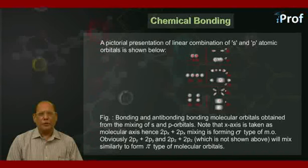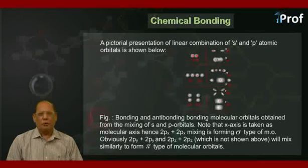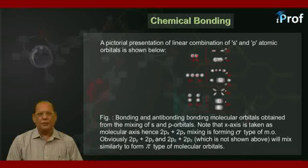Similarly, 2px orbital of one atom combines with 2px orbital of another atom. Again, the two new molecular orbitals are being formed. The molecular orbital of lower energy is sigma 2px. And that of higher energy is sigma asterisk 2px.